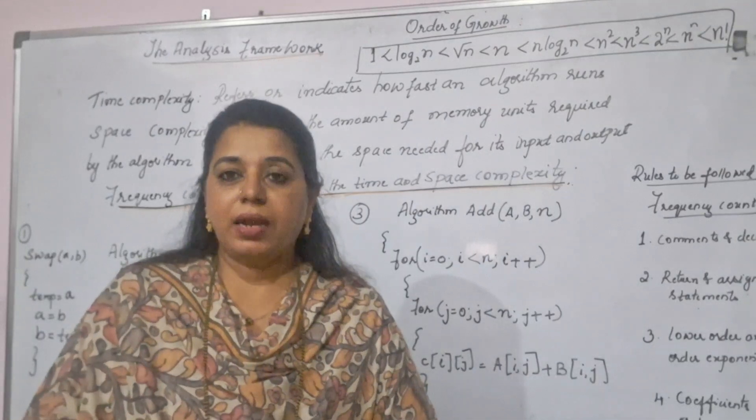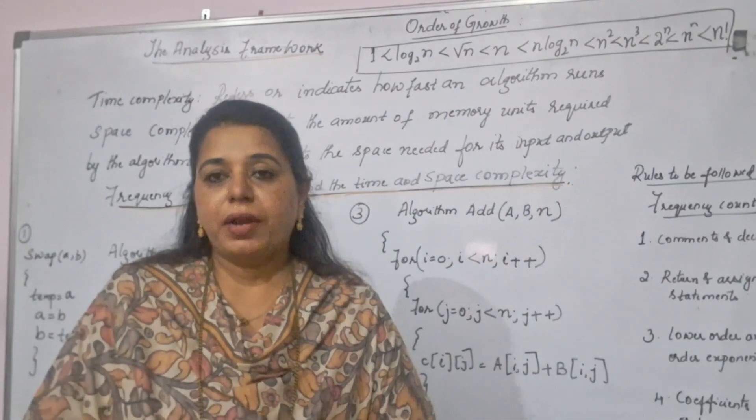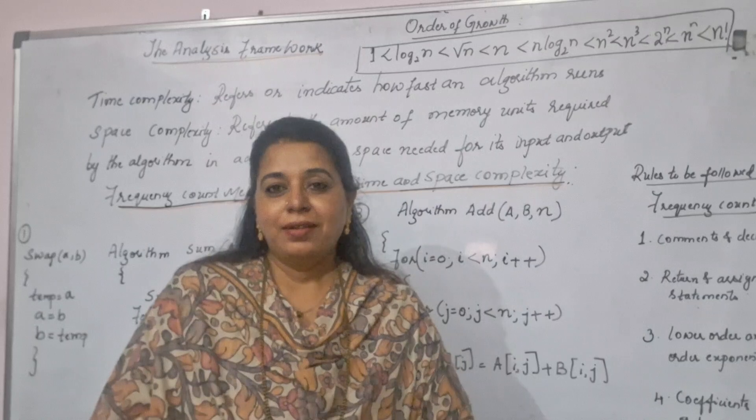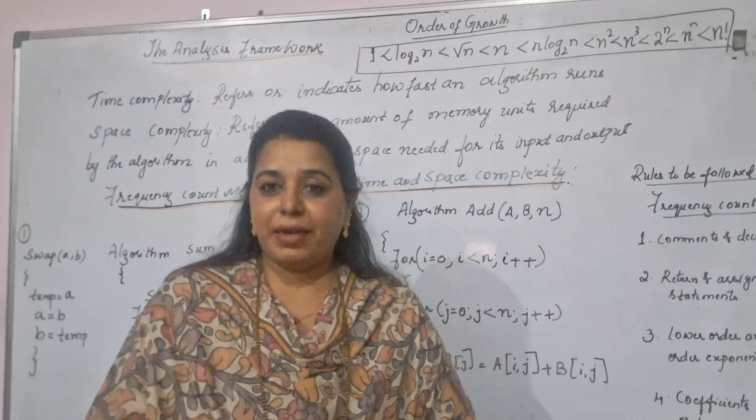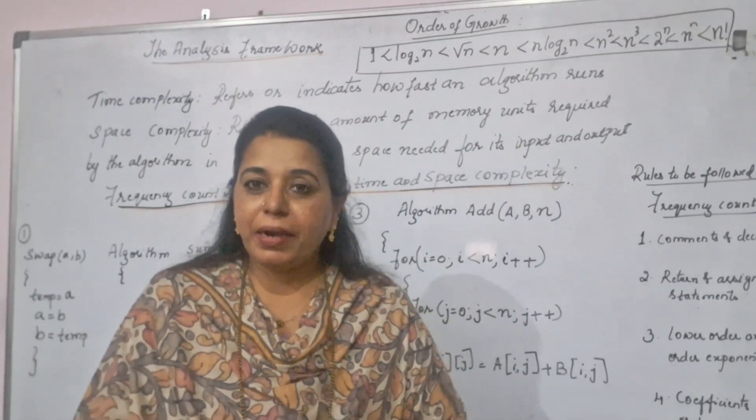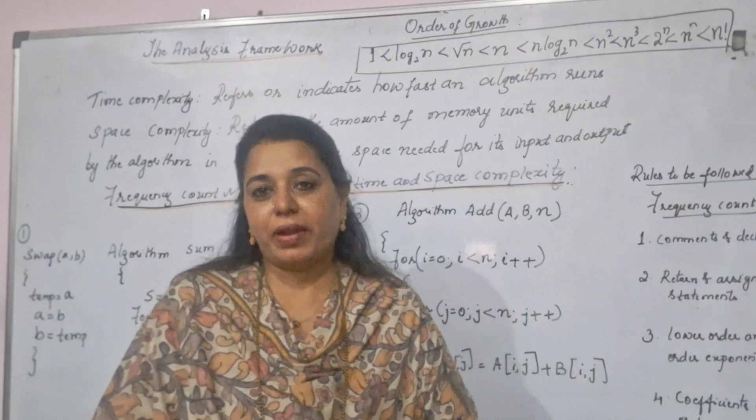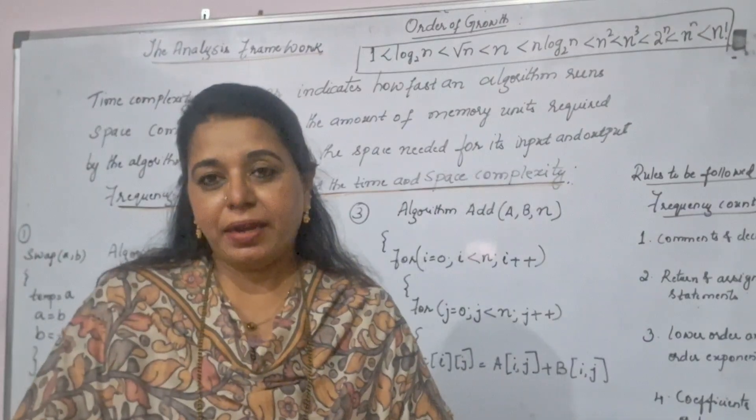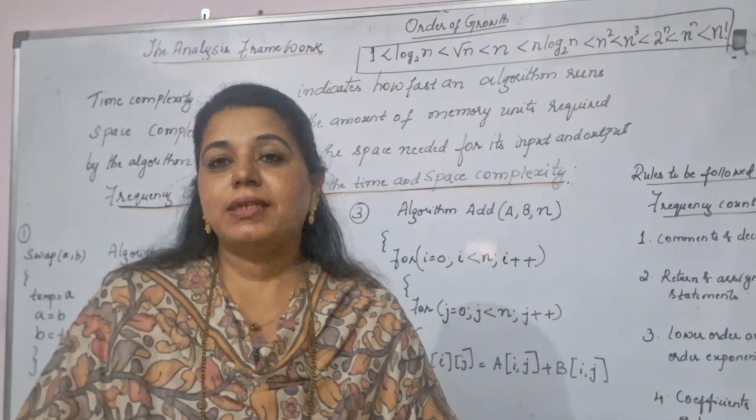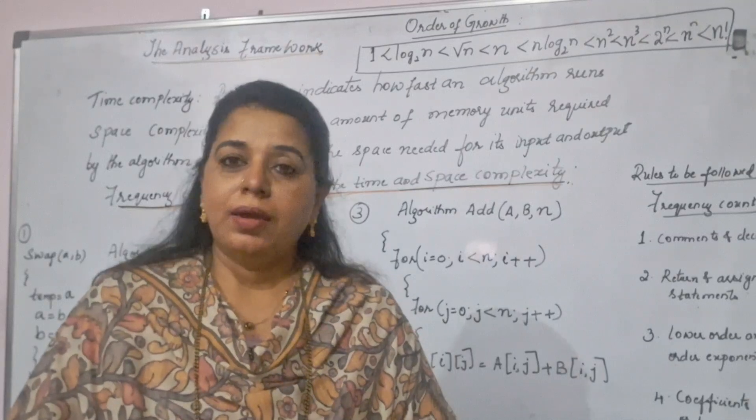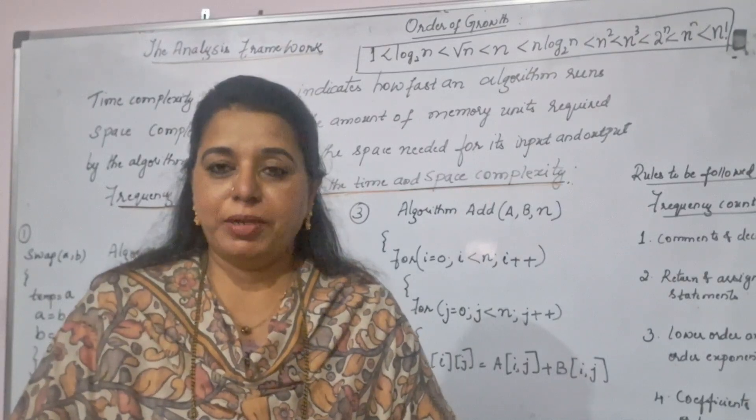Now, since all these factors are making the running time different for both of our algorithms, that is the reason we have to go for a metric which is independent of all these external factors. That is why we can come up with a metric, a procedure which is going to give you the same running time when executed in any of the machines.